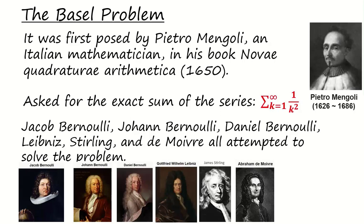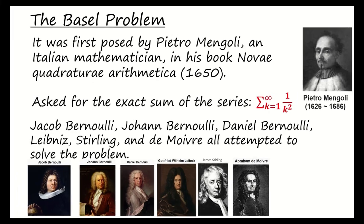In his book, he asked for the exact sum of the series summation 1 over k squared where k equals 1 to infinity. Many famous mathematicians including the Bernoulli family members Jacob Bernoulli, Johann Bernoulli, Daniel Bernoulli, as well as Leibniz, Stirling, and de Moivre all attempted to solve the problem. It was first found by Euler that the sum equals pi squared over 6.